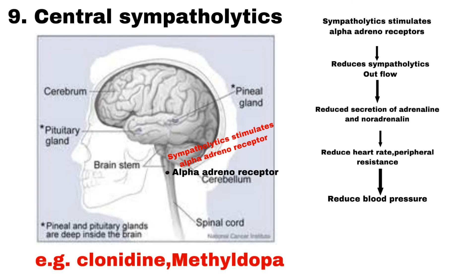Number 9 is Central Sympatholytics. Central Sympatholytics stimulate alpha adrenoreceptors in the brainstem. This action results in reduced sympathetic outflow, or you can say reduced secretion of adrenaline and noradrenaline, and that way there is decreased peripheral resistance, renal vascular resistance, and hence reduced blood pressure. Examples of Central Sympatholytics are Clonidine and Methyldopa.